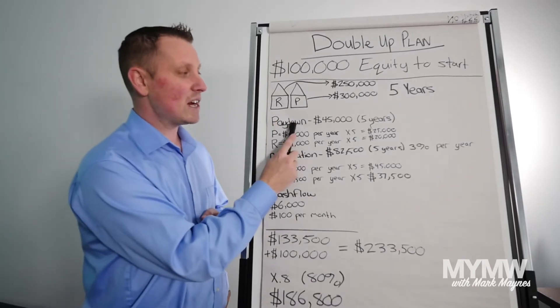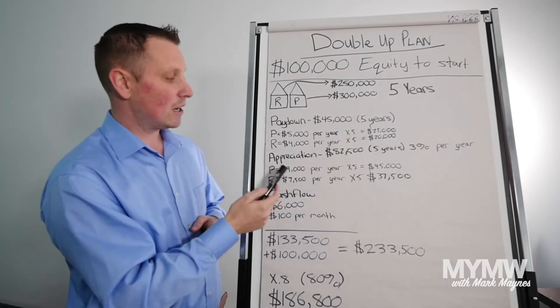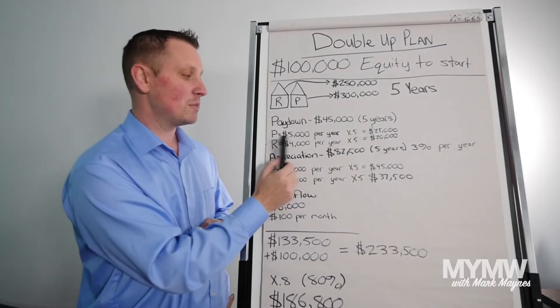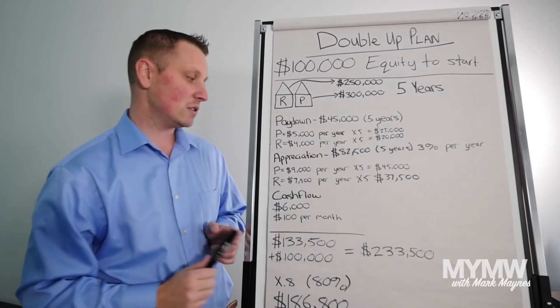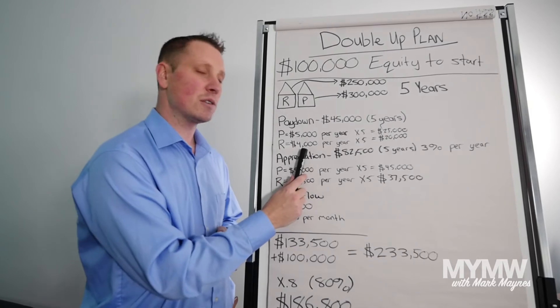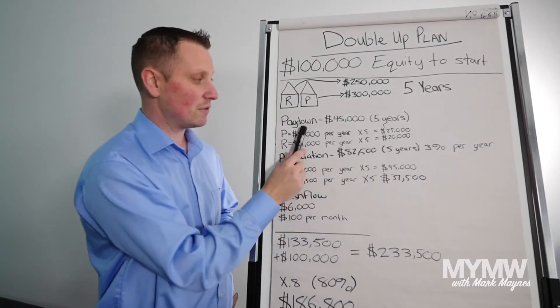You're going to pay down $45,000 over five years. How I got this number: your personal property is going to pay down $5,000 a year for five years, which is $25,000. And the rental is going to pay down $4,000 a year, five years $20,000. So that brings us to $45,000.